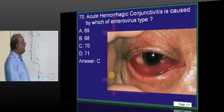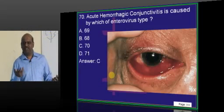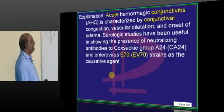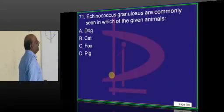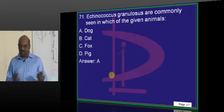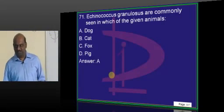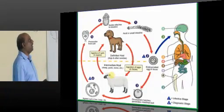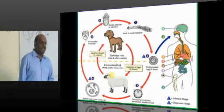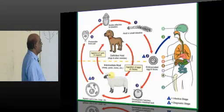Acute hemorrhagic conjunctivitis is due to enterovirus 70 — this is a standard question and you should answer it. Echinococcus granulosus: where does it perform sexual reproduction? The dog is the definitive host. Sheep, goat, and swine are all intermediate hosts.